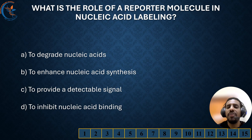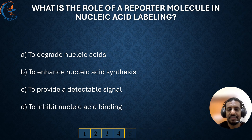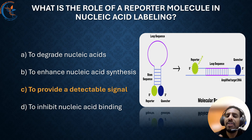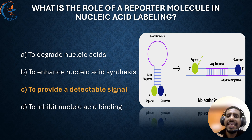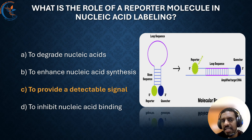What is the role of the reporter molecule in nucleic acid labeling? The correct answer is to provide a detectable signal. A reporter molecule is a special marker used in nucleic acid labeling to make DNA or RNA sequences easier to detect. It produces a clear signal such as fluorescence or color, allowing scientists to see where the labeled sequences are and measure how much is present. This is especially useful in genetic research, diagnostics, and molecular biology experiments.